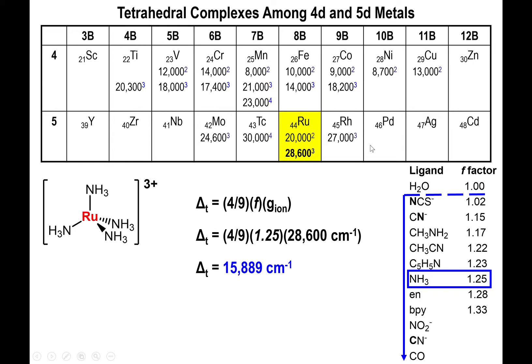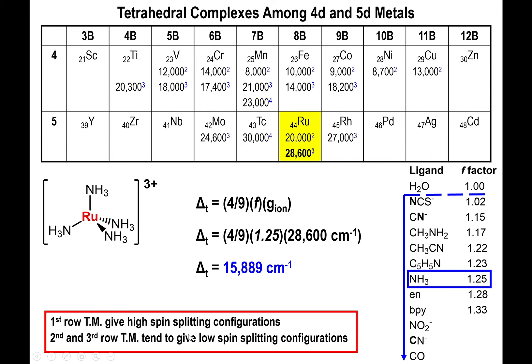For this second row transition metal, you actually made the cutoff for a low spin complex. The first row gives you high spin configurations, but the second and third row will most likely, regardless of whether you have octahedral or tetrahedral complex, give you the low spin configuration. That's very unique to second or third row transition metals.